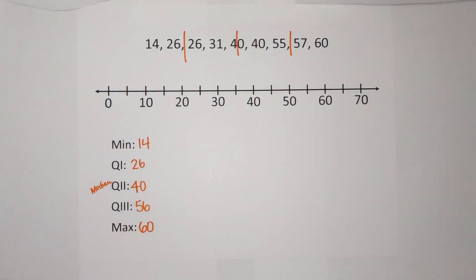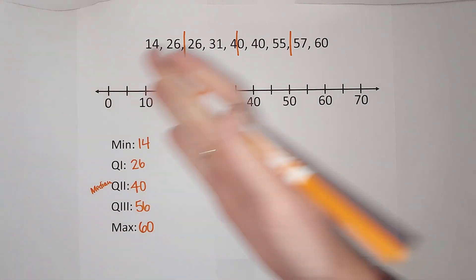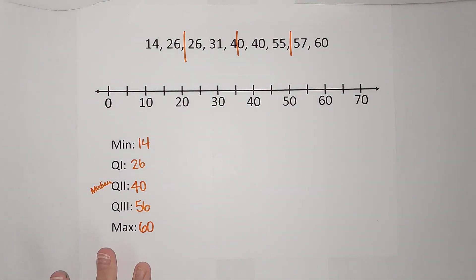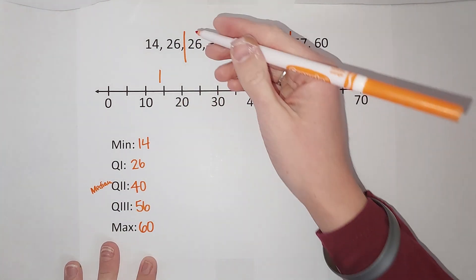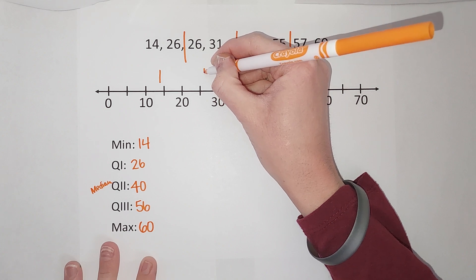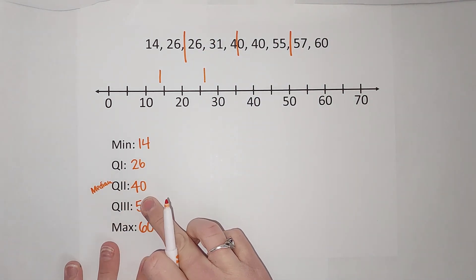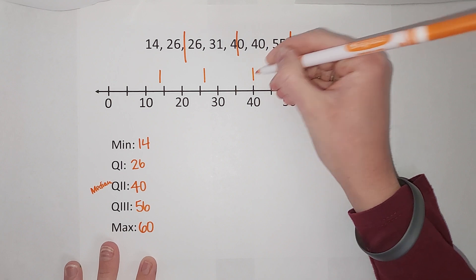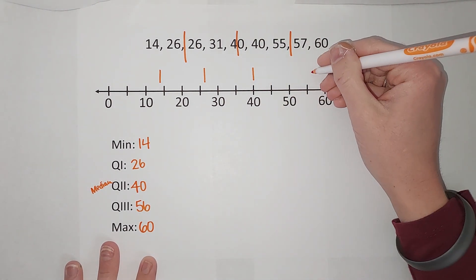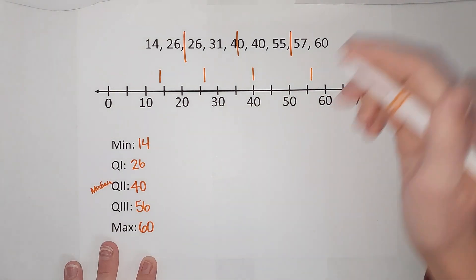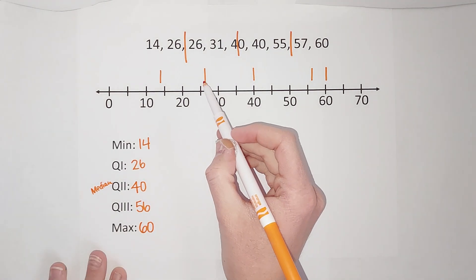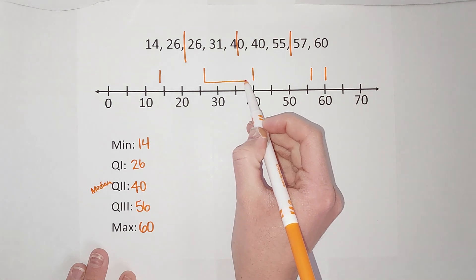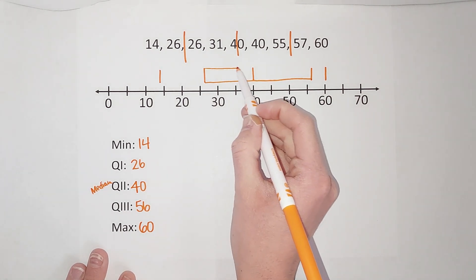Now I have all five pieces of information, and I get to plot them on the number line. My minimum is 14, so it goes here. My first quartile is 26, so about here. My second quartile is 40, so about here. My third quartile is 56, so about here. And my maximum is 60, so about there.